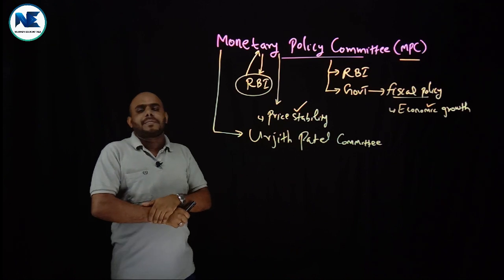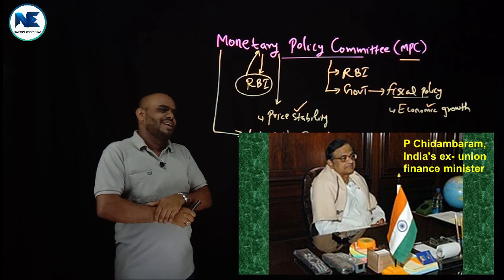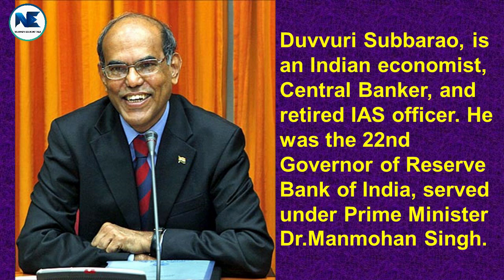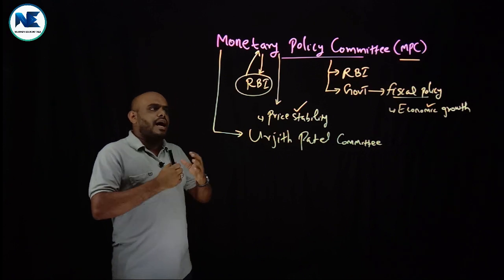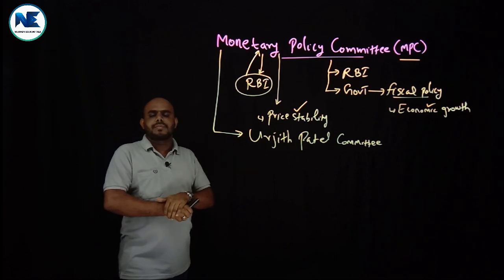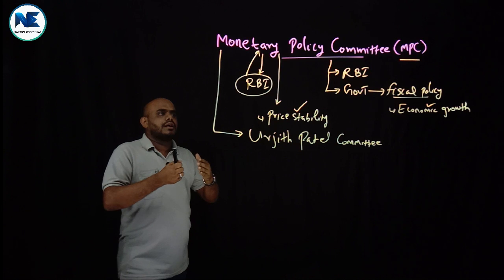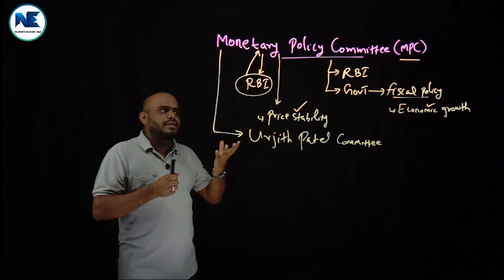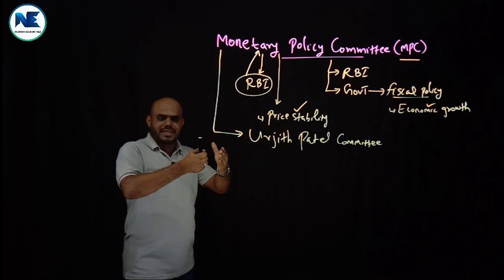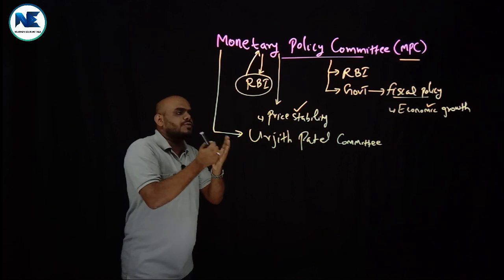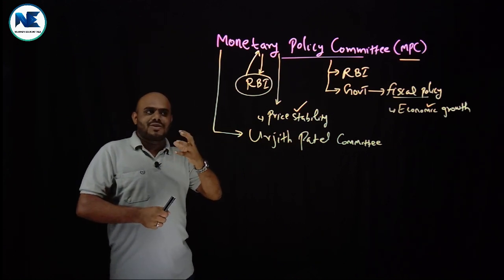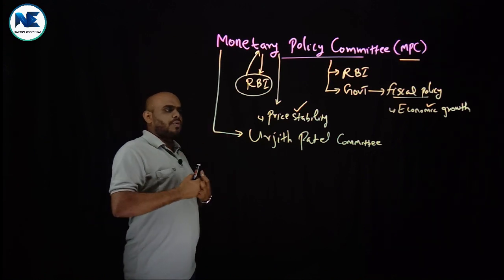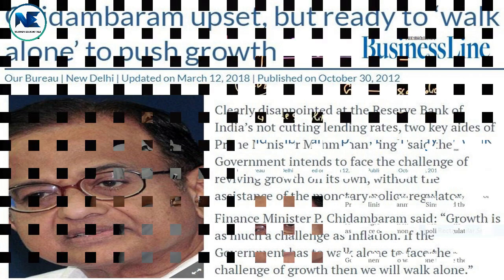In 2010, there was an argument - the government was ready to walk alone. At that time, D. Subbarao was the RBI Governor. There was an economic setback, a crisis, and the RBI maintained its monetary policy stance. D. Subbarao maintained the repo rate unchanged, stating that the RBI's main concern is price stability, as price stability is one of the prerequisites for economic growth. But the government was ready to walk alone, saying they would do their level best to revive economic growth.